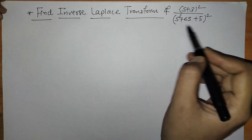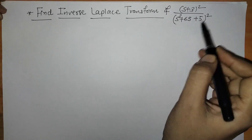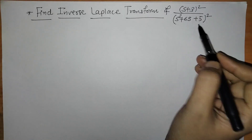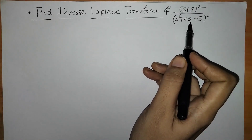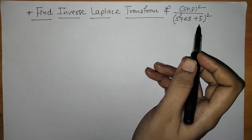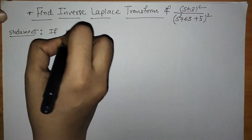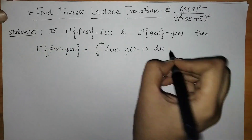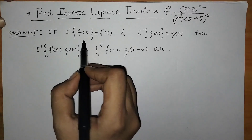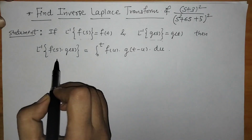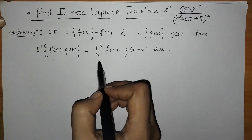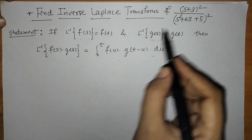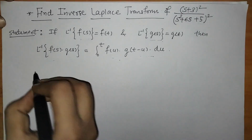Here we can check that in the denominator we have a repeated quadratic factor. So it is good to use the convolution theorem rather than the partial fraction method for finding the inverse Laplace. We have to write down the statement of the convolution theorem.